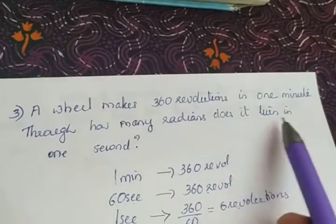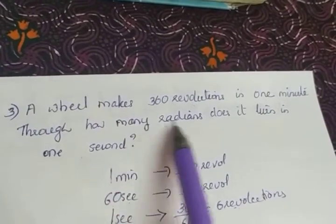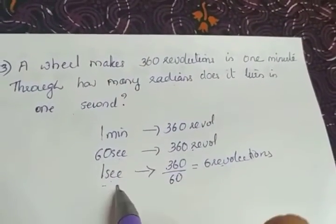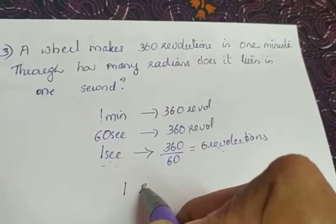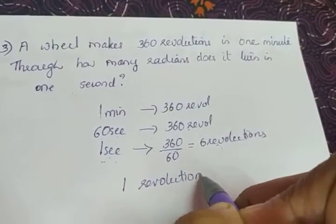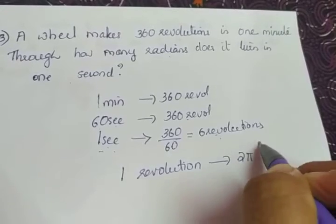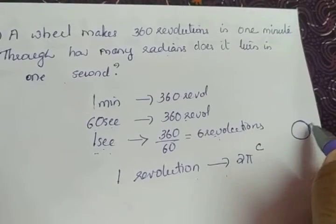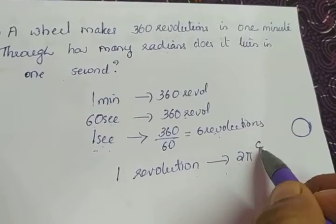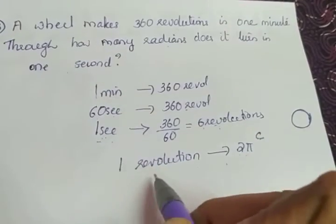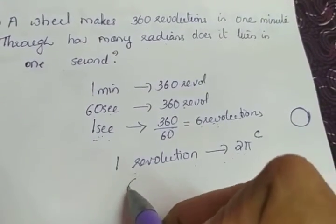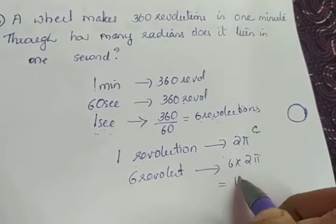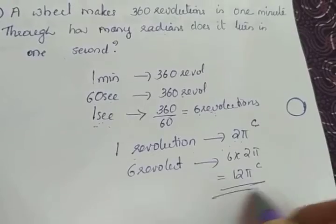The question asks through how many radians does it turn in one second. Radians means we have to find the angle it turns in one second. In one second it revolves six times. One revolution means a complete circle, which is 2π radians. So six revolutions make an angle of 6 × 2π, which equals 12π radians.